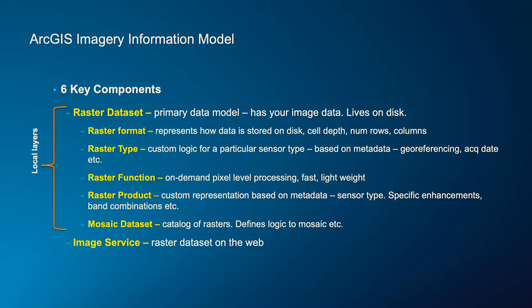There's a Mosaic data set, which acts like a catalog of all the different imageries you would have for a particular project set. All of these are local rasters — local data sets you would have on disk. But what we are going to work on is image service — when you publish it onto a server and serve it out as a service. An image service can be considered analogous to the raster data set, and you get all these functionalities also within an image service. When we use the Python API today, we'll be making use of these image services.